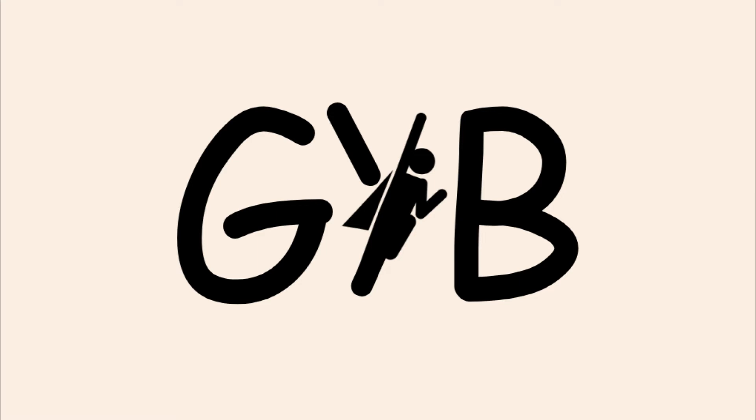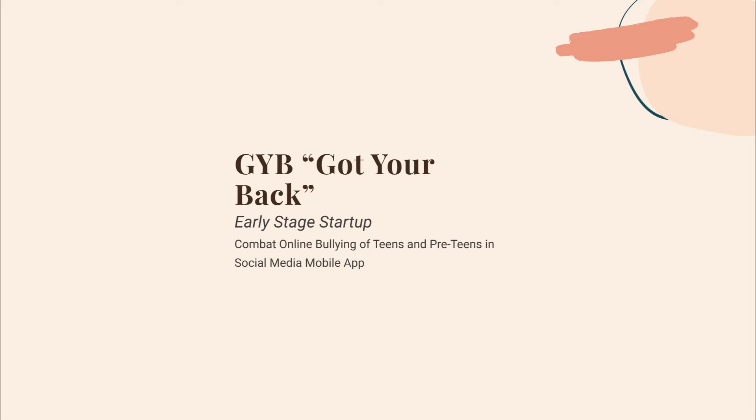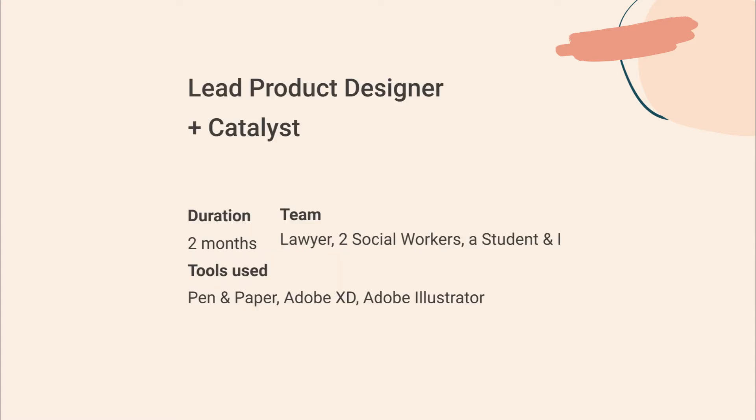JYB is an early stage startup in the mobile app space. The purpose of the product is to combat online bullying within teens and preteens in the realms of social media. My role in the startup was lead product designer and catalyst. My team consisted of a lawyer, two social workers, another student, and I. This product took around two months to complete and I was hired during my last year of university.